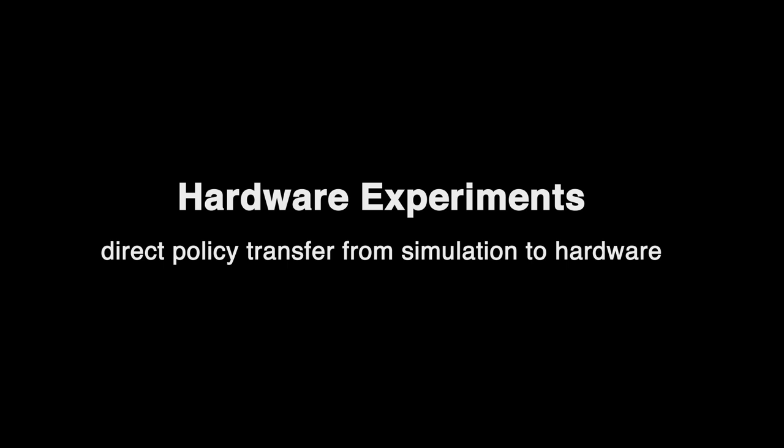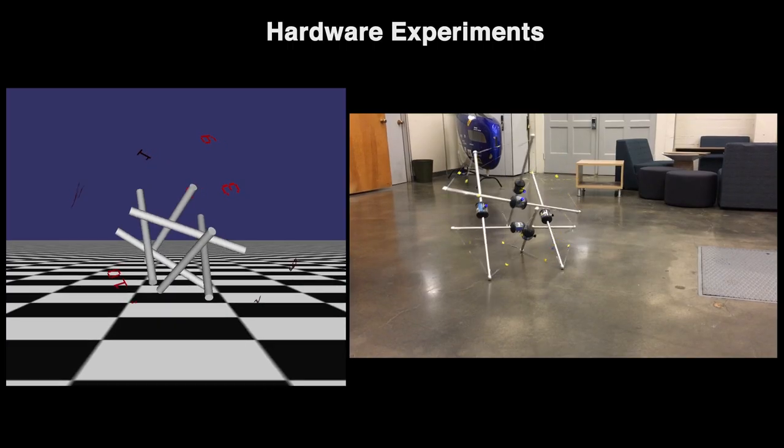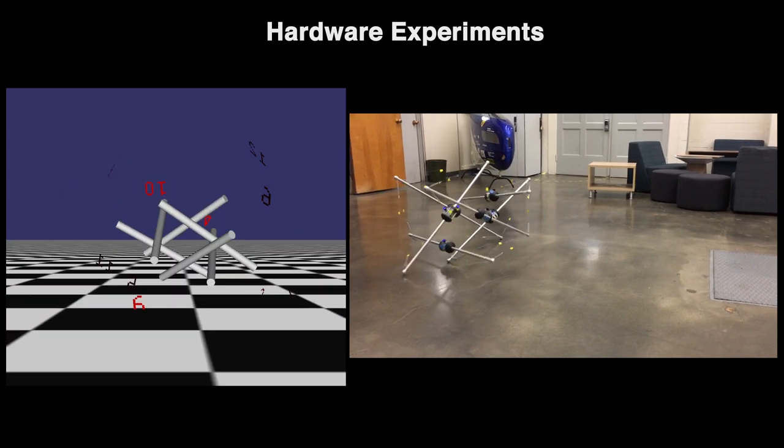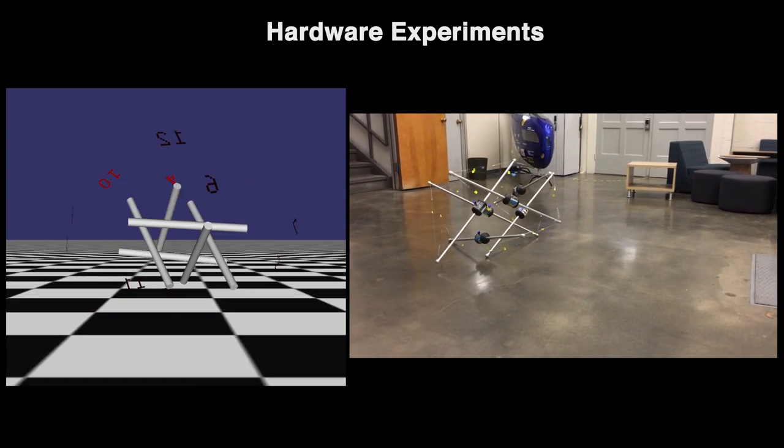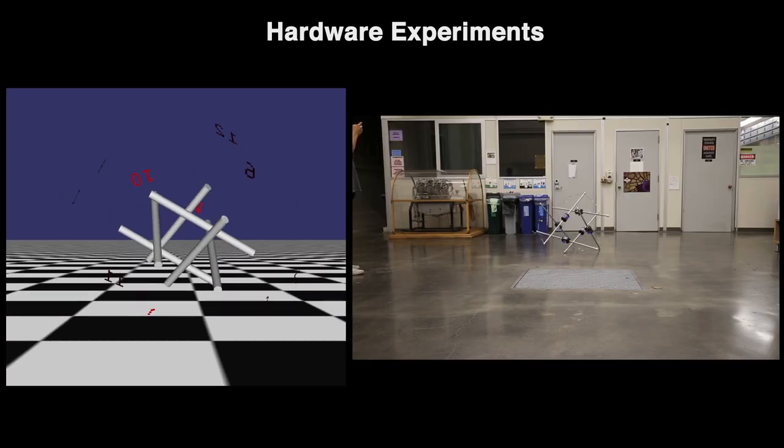We also applied our learned policy directly onto the TT4 spherical tensegrity robot, designed and built by our own Berkeley Emergent Space Tensegrities Lab, and achieved preliminary results supporting the potential of our approach.